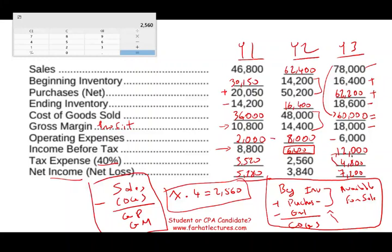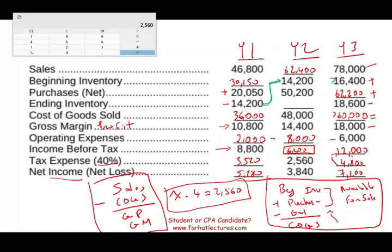One important thing to notice: ending inventory always becomes the beginning inventory of the following year. Sometimes a problem will give you ending inventory but not beginning inventory — or vice versa. You can't solve for both if both are missing, but knowing that beginning inventory equals the prior year's ending inventory lets you handle that scenario.